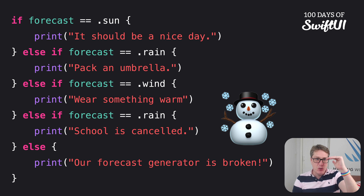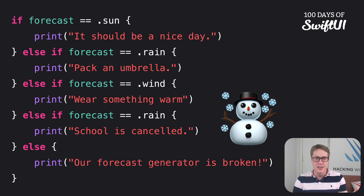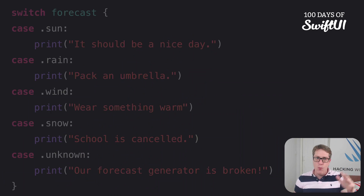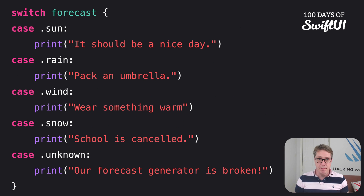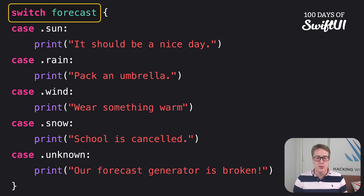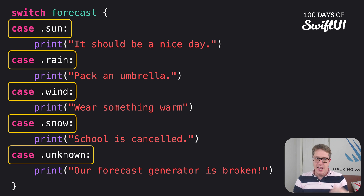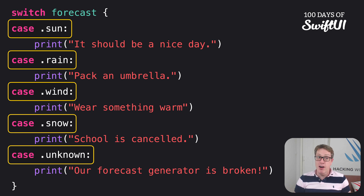Switch also allows us to check individual cases — sun, rain, wind, snow, unknown — but now Swift, the compiler building our code, is able to help us out and do extra work on our behalf. It knows all the possible cases of our enum, so if you check one twice it'll complain, and if you forget to check one it will refuse to build your code. We can replace all the if/else-if/else with a switch block. Each case lists exactly one weather type.